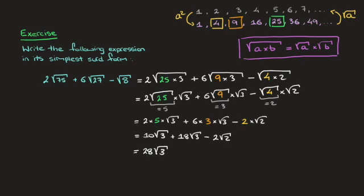And of course we still have minus 2 root 2. We stop there — we cannot do any further operations with these two terms. Because the surds are different (square root of 3 and square root of 2), this cannot be simplified any further. That's the final answer.